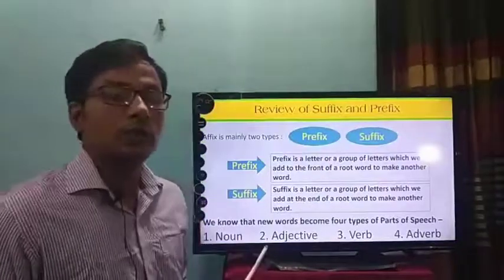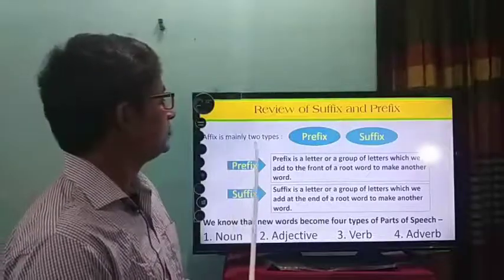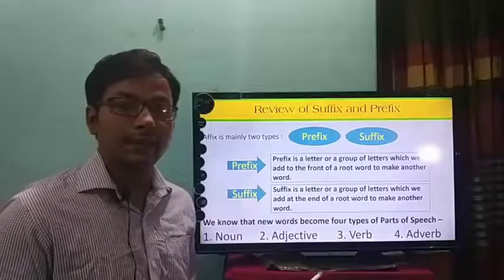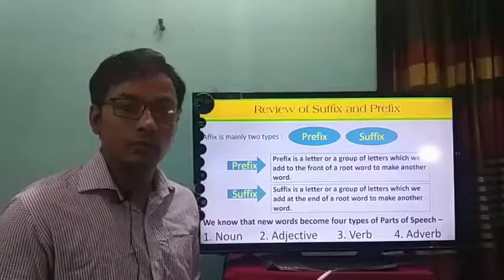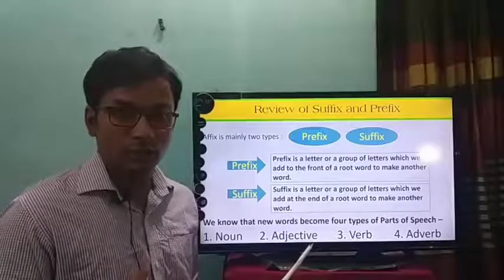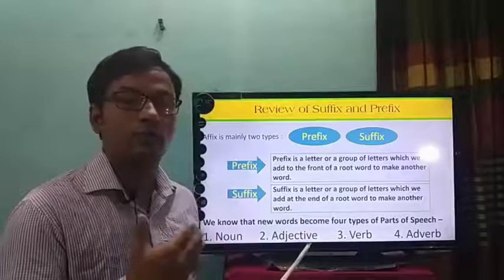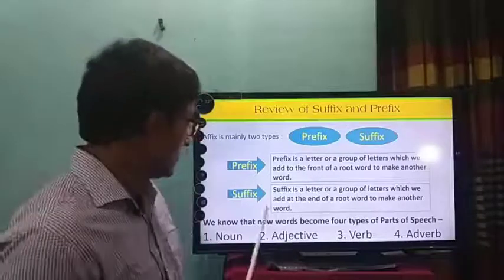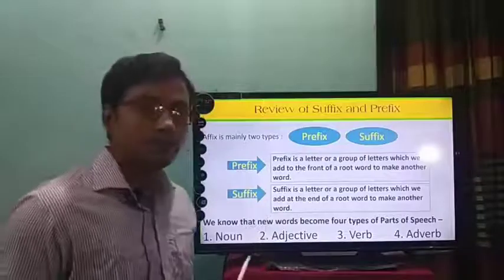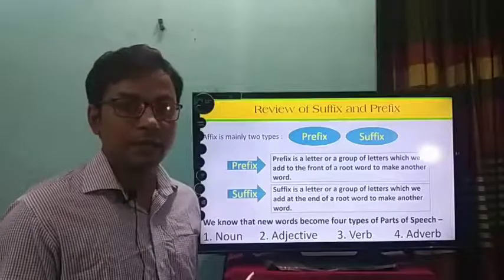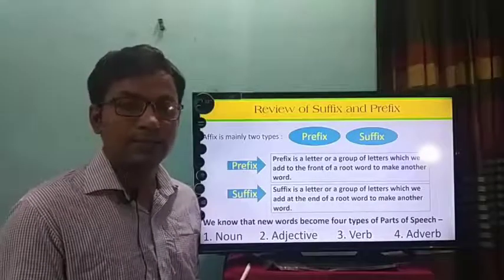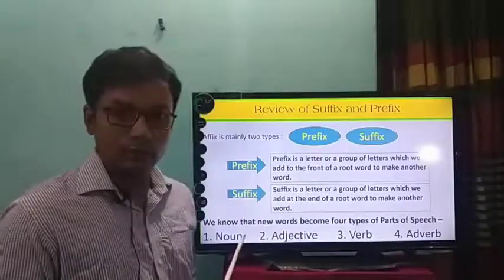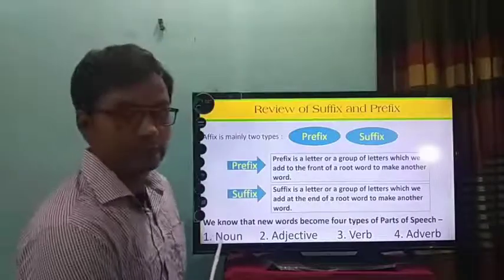Now I would like to review our class on suffix and prefix. Affix is mainly two types: prefix and suffix. Prefix and suffix is a letter or a group of letters which we add with root words to make new words. When we add this to the front part of a word, it is called prefix. When we add it to the ending part, it is called suffix. New words become only four types of parts of speech: noun, adjective, verb and adverb. Always remember these four types.